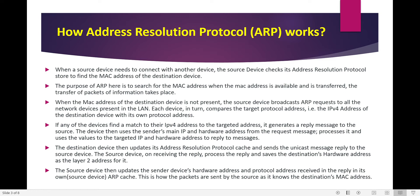Whenever an ARP broadcast is sent, a query is sent asking: what is the IPv4 address which belongs to a certain MAC address? The destination device which has a matching IPv4 address will get to know there is a query for knowing its MAC address. So it will reply with its own MAC address to that IP, and it will also use the MAC address of the sender. Any device that finds a match to its IPv4 address with the targeted address will send the reply.